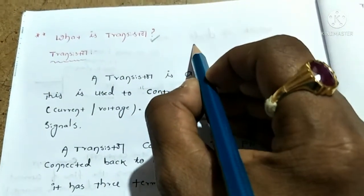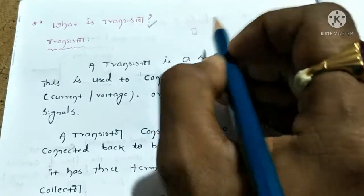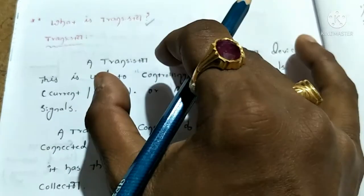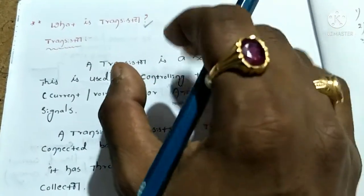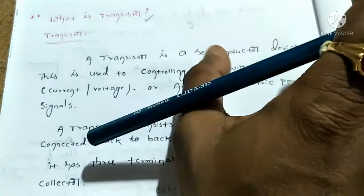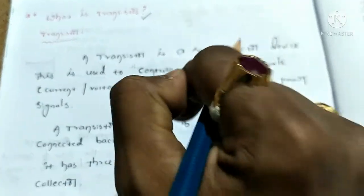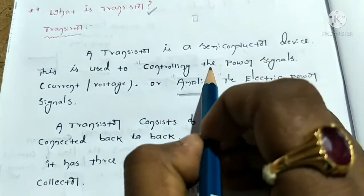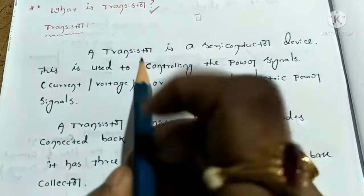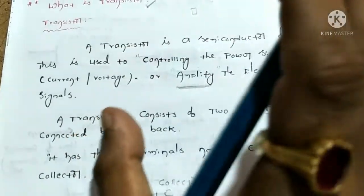For example, we have a device at home — a TV. We have a switch to turn it on and off. You control it: you control the power signal. Power on means the TV is on; power off means the TV is off. So this is controlling the power signals — the voltage and current are controlled.